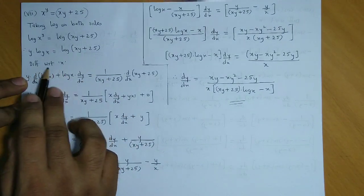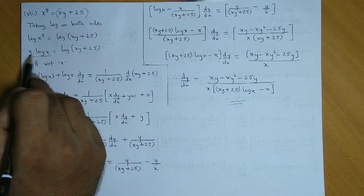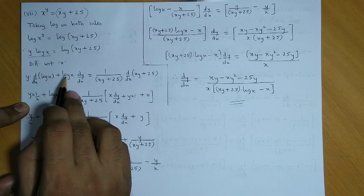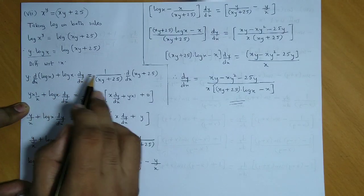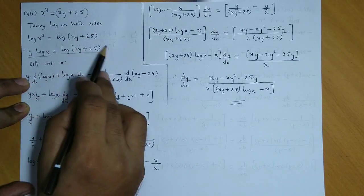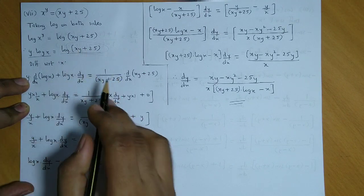Now we differentiate with respect to x. On the left hand side we apply the u into v rule. So we get y into derivative of log x plus log x into derivative of y, is equal to the right hand side derivative. First we take log's derivative, so log of xy plus 25, its derivative will be 1 upon xy plus 25 into derivative of xy plus 25.